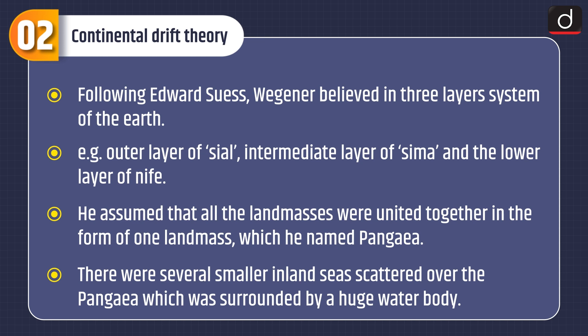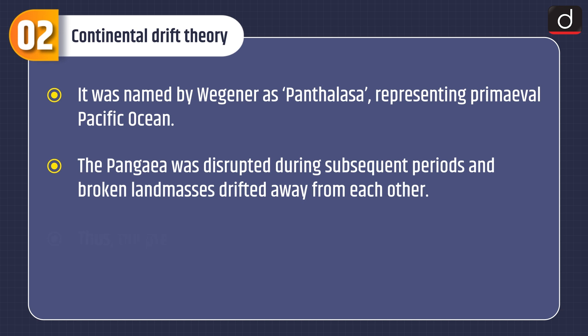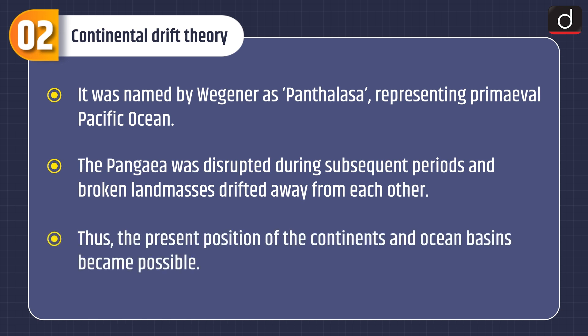There were several smaller inland seas scattered over the Pangaea, which was surrounded by a huge water body named by Wegener as Panthalassa, representing the Primeval Pacific Ocean. The Pangaea was disrupted during subsequent periods and the broken land masses drifted away from each other. Thus, the present positions of the continents and ocean basins became possible.